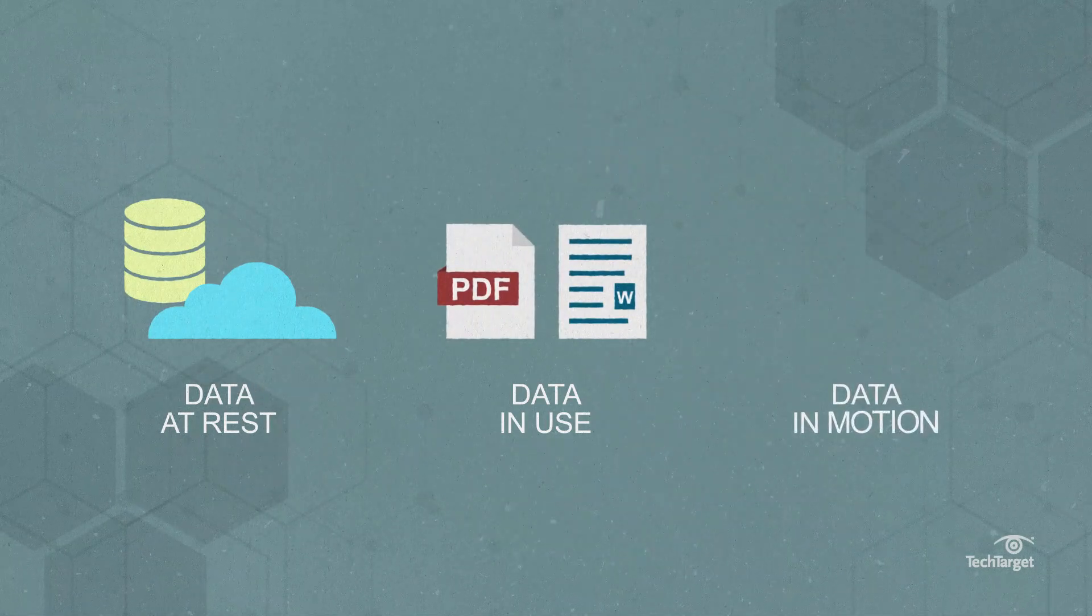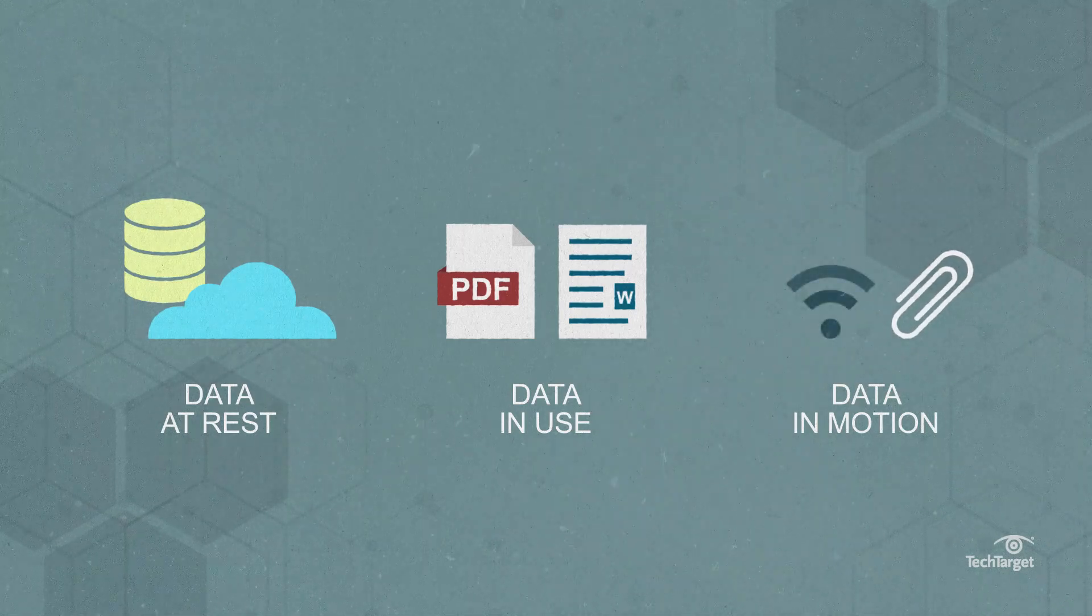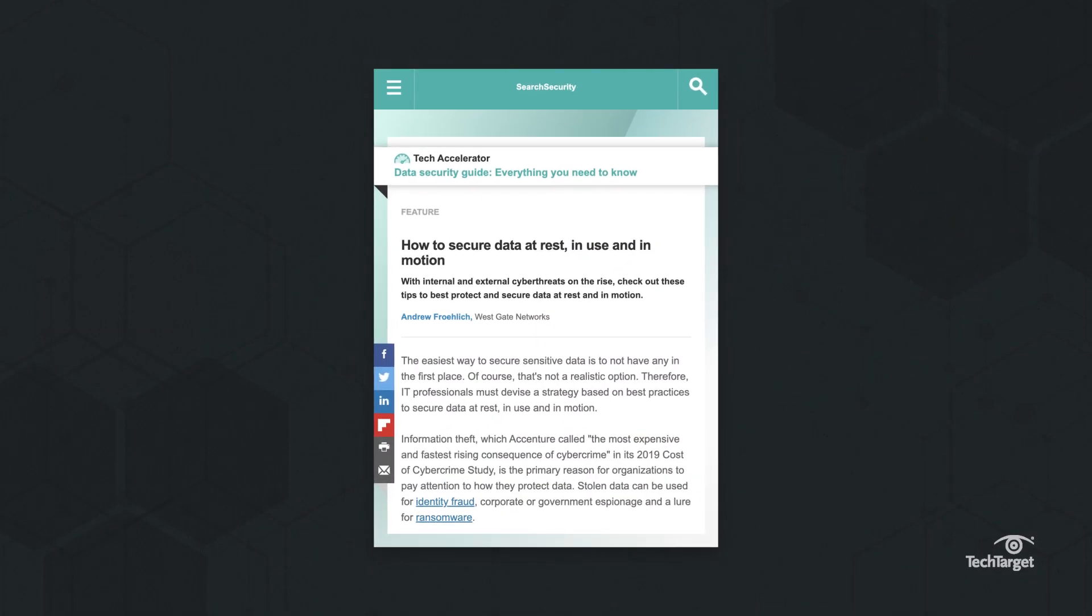And data in motion is data being transported between locations, like email attachments or Wi-Fi networks. Learn more about how to secure data in each of these states in the link above or in the description below.